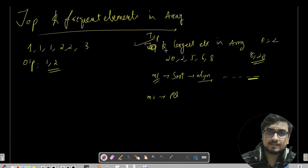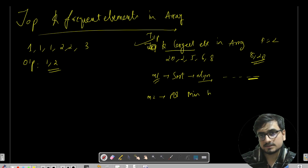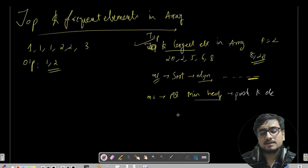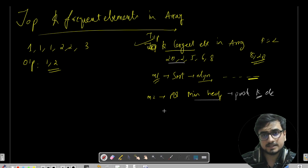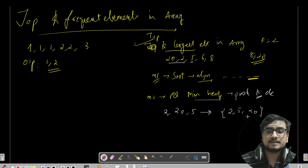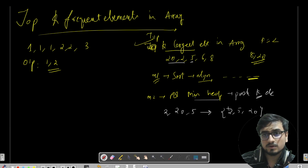Using a priority queue, we can do better. We use a min-heap and push the first K elements. Since K is 2, we push the first two elements — the min-heap maintains ascending order. When the next element 5 comes in, the priority queue looks like 2, 5, 20. Since the number of elements exceeds K, we call pq.poll() to remove the smallest element.